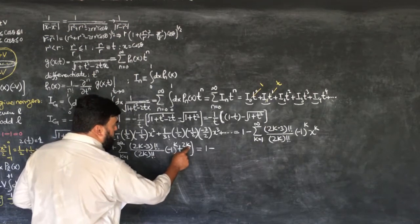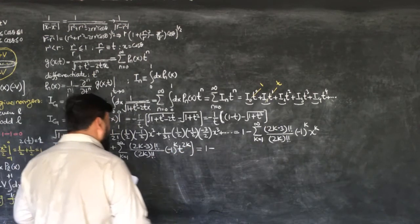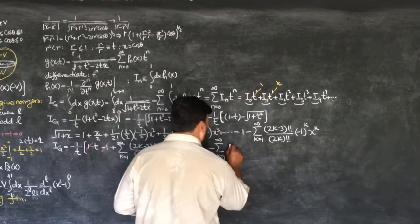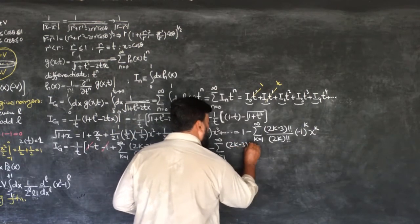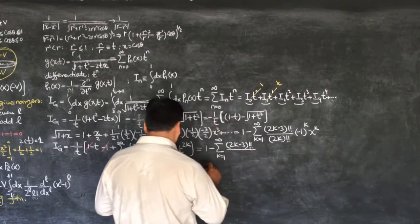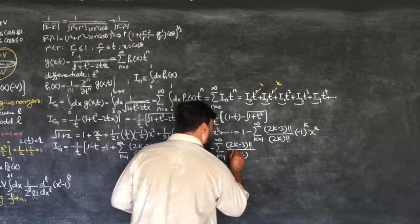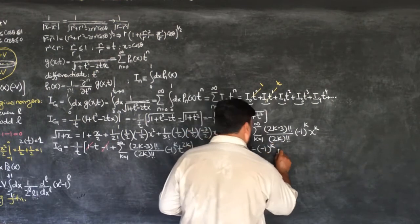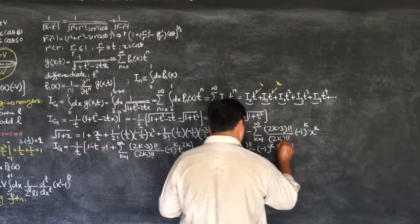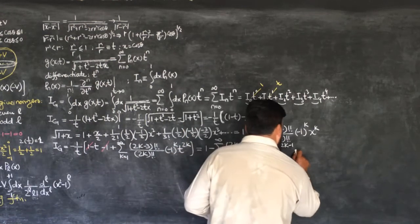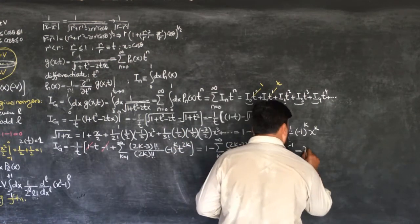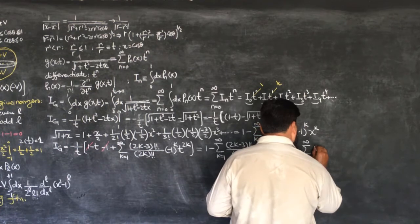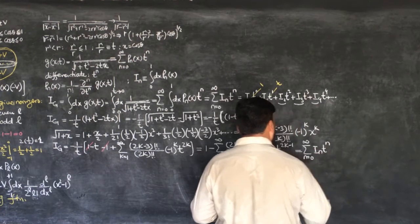After multiplying by (−1/t), the summation becomes: minus the summation over k from 1 to infinity of (2k−3)!! over (2k)!! times (−1)^k times t^(2k−1). This is equal to the summation from n=0 to infinity of I_n t^n, so we now compare coefficients to find each I_n.